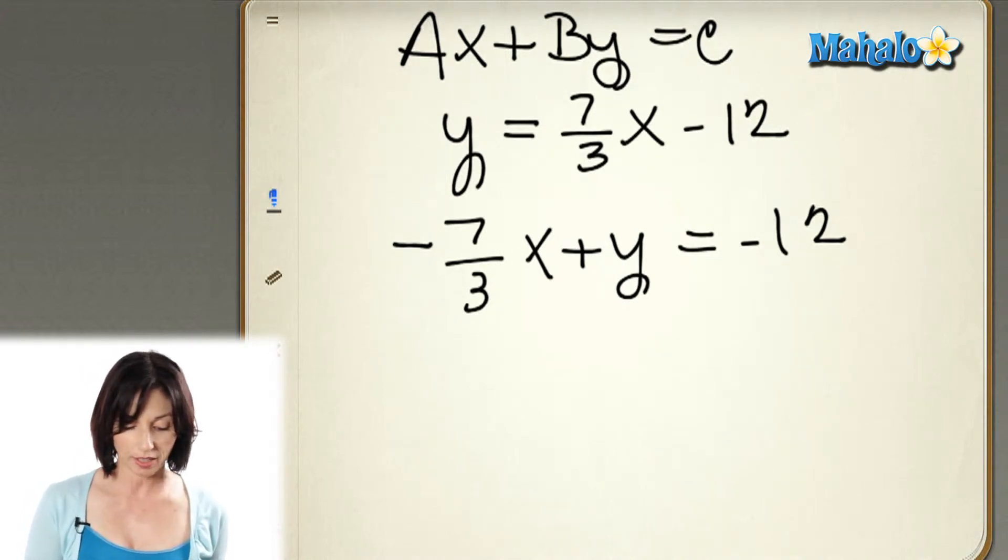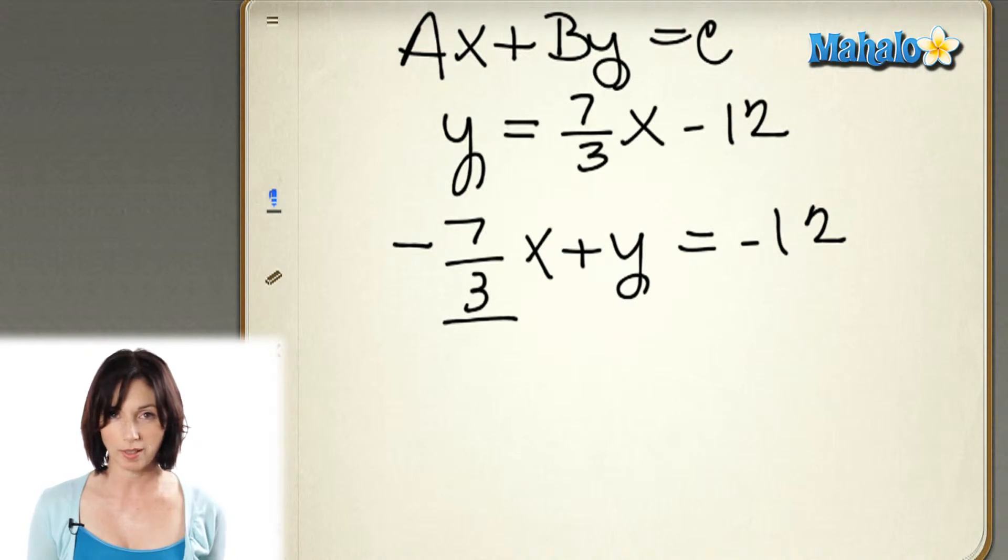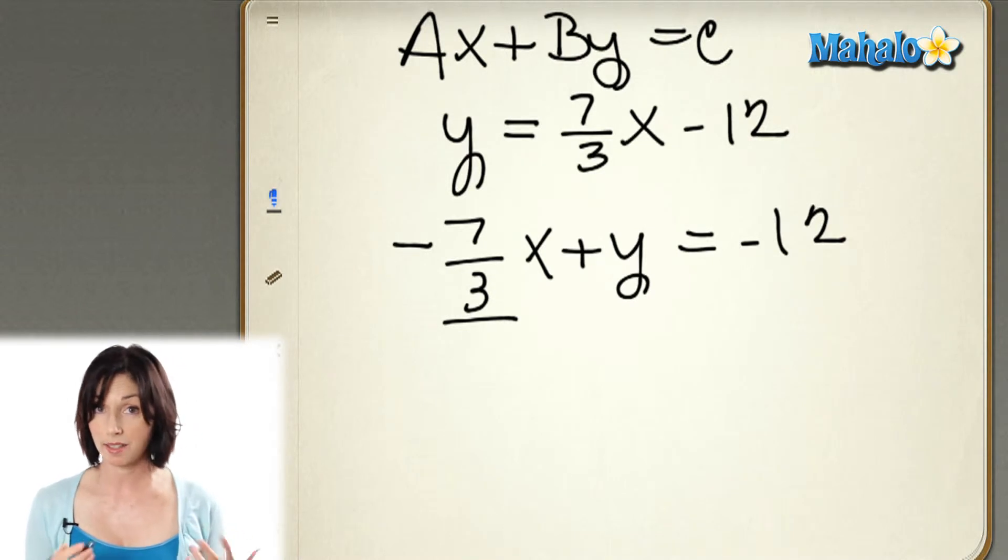But I have this fraction here in front of the x, and I don't want it there. So what I'm going to do is multiply both sides of this equation by 3, the number that's in the denominator of the fraction, and get rid of that fraction.